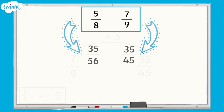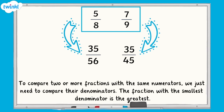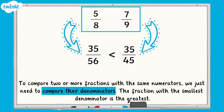Remember the rule: to compare two or more fractions with the same numerators, we just need to compare their denominators. The fraction with the smallest denominator is the greatest. Therefore, 35 45ths is the greatest as it has the smallest denominator. We would say that 5 eighths is less than 7 ninths.